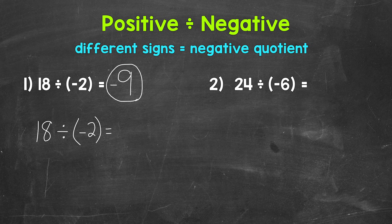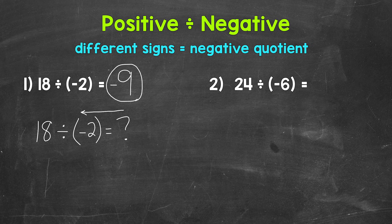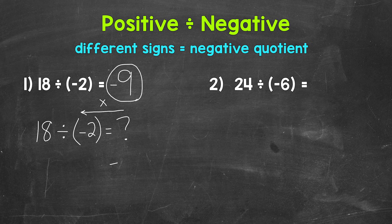So let's think how many groups of negative 2 or what times negative 2 equals that 18? Well, negative 9.